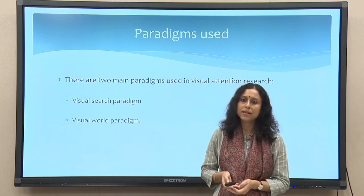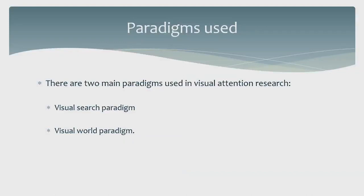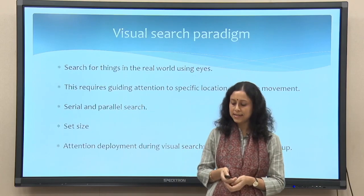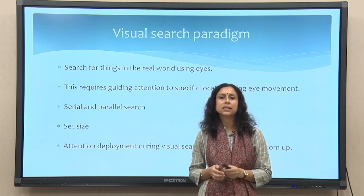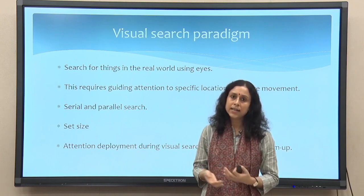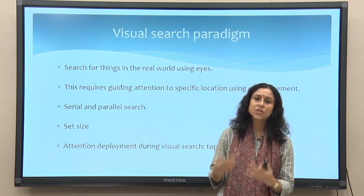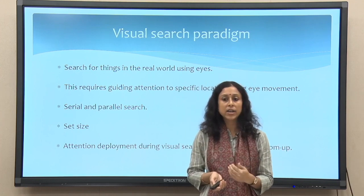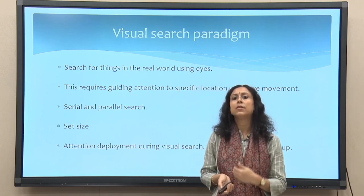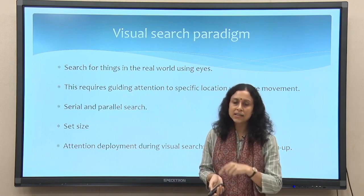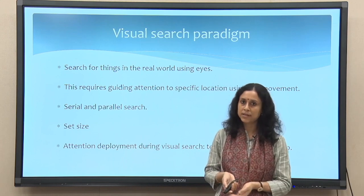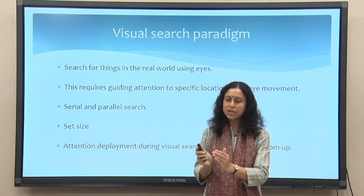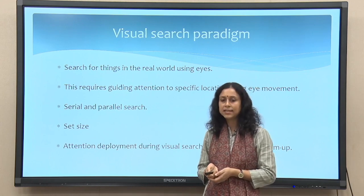There are two main paradigms used in visual attention research. One is called the visual search paradigm; the other is the visual world paradigm. They are similar but not the same. Visual search paradigm works on the basic idea that eyes look at and search for things in the real world. This requires guiding attention to specific locations using eye movement. When we look for something, we scan the scene or environment using our eyes, channelizing attention onto a particular object.